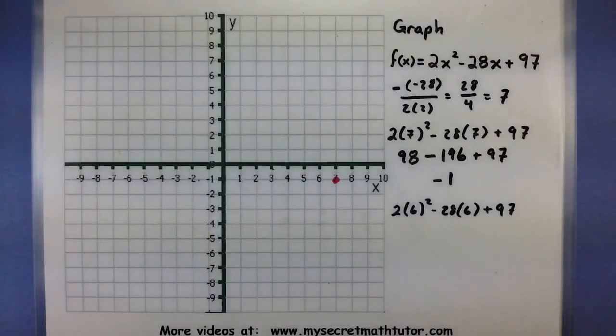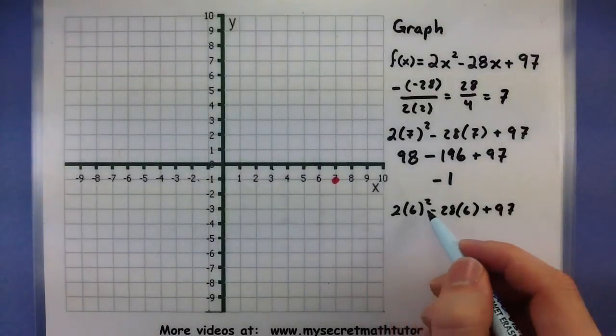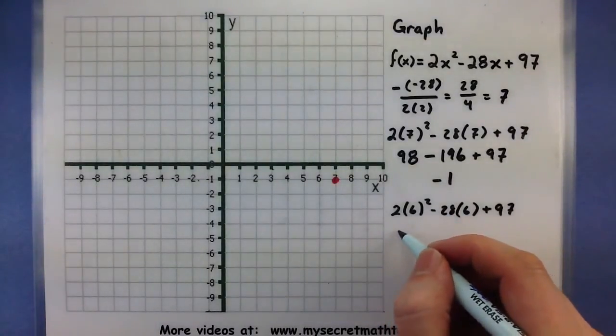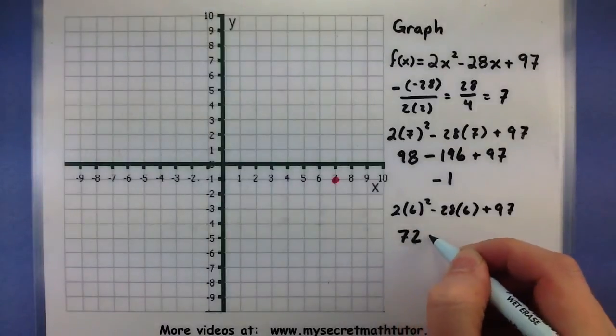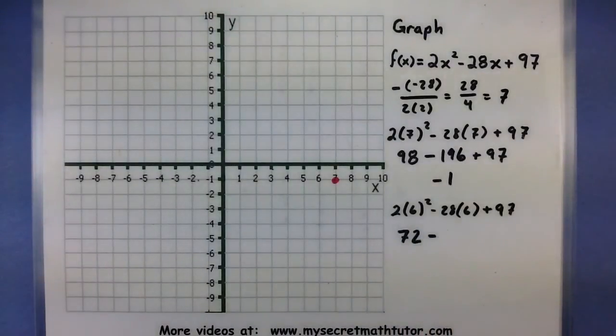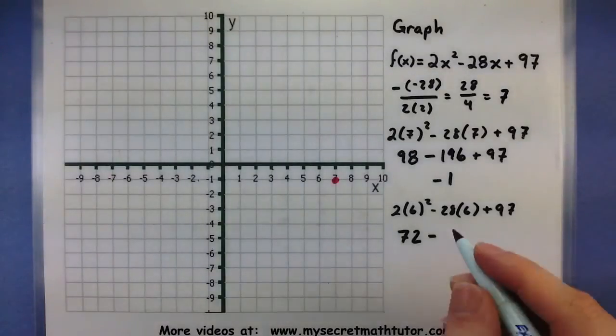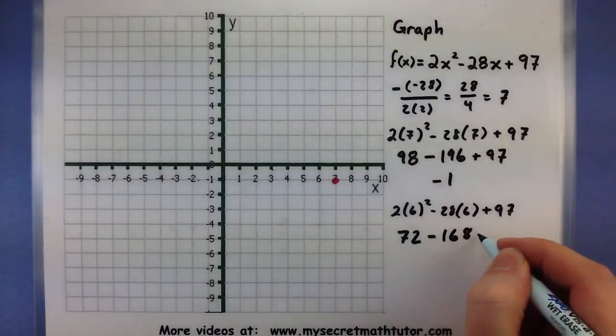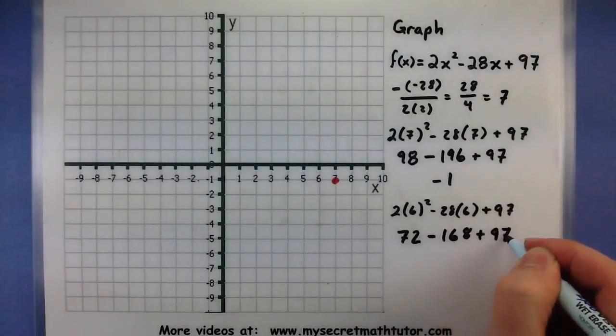Let's see if we can simplify this. So, 2 times 6 squared, this will give us a 72. And now I have 6 times 28.